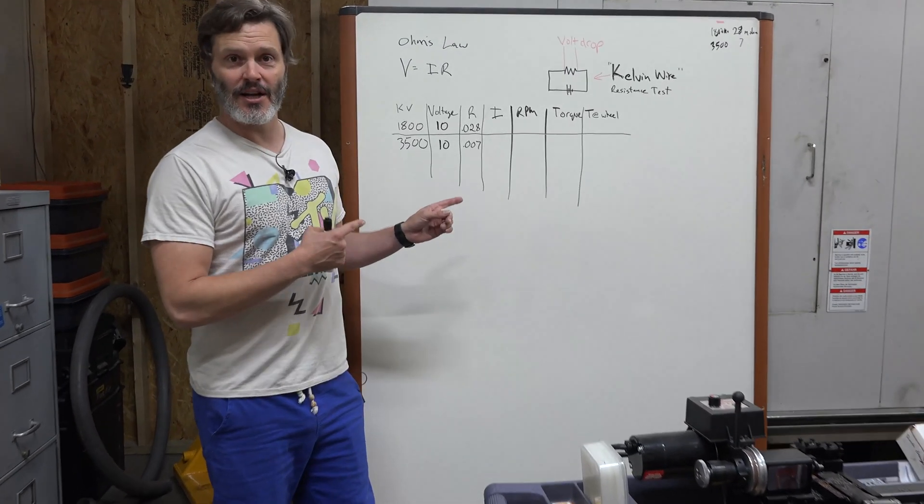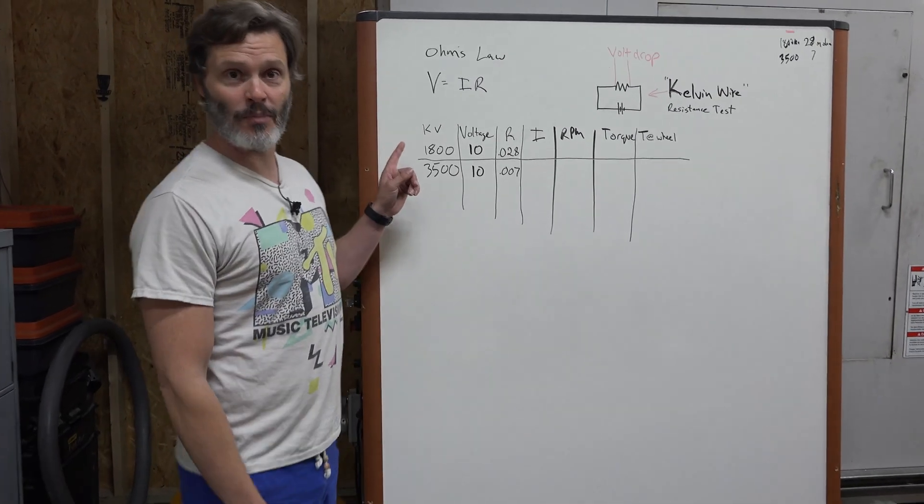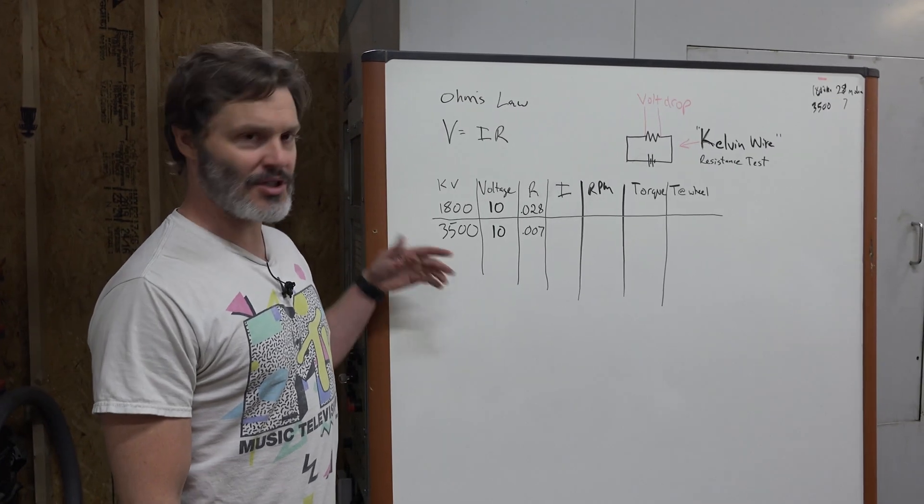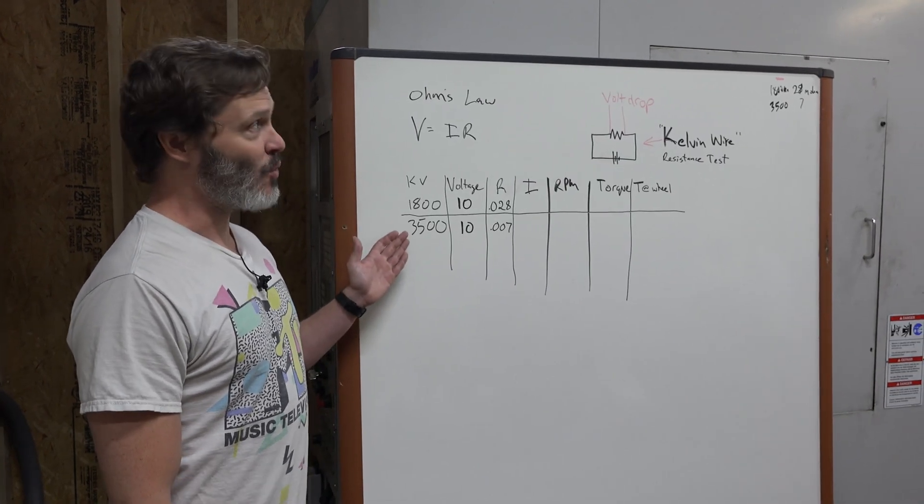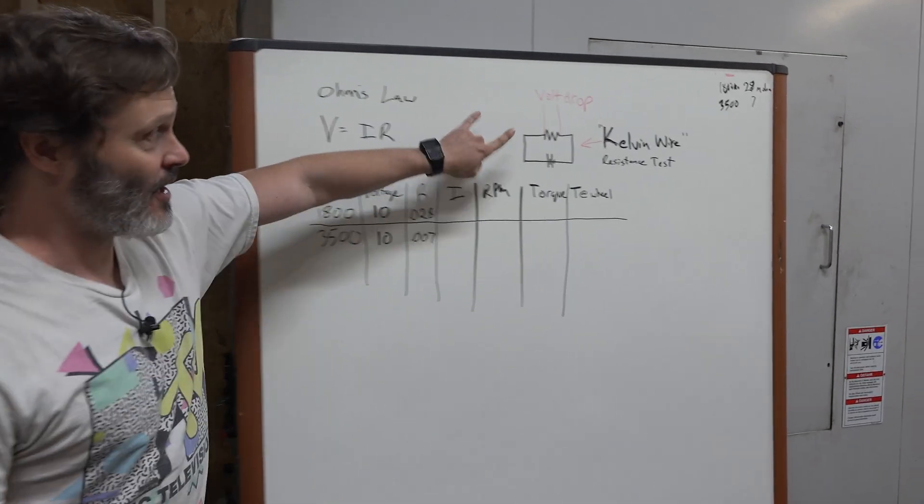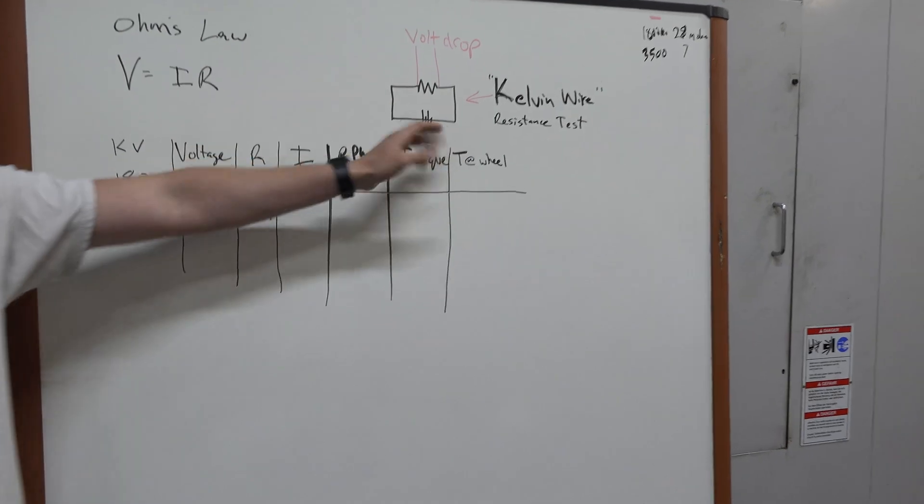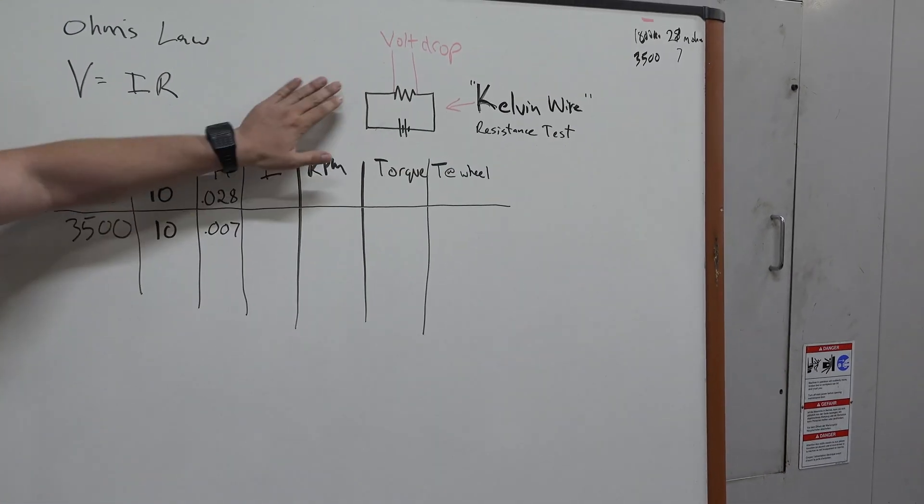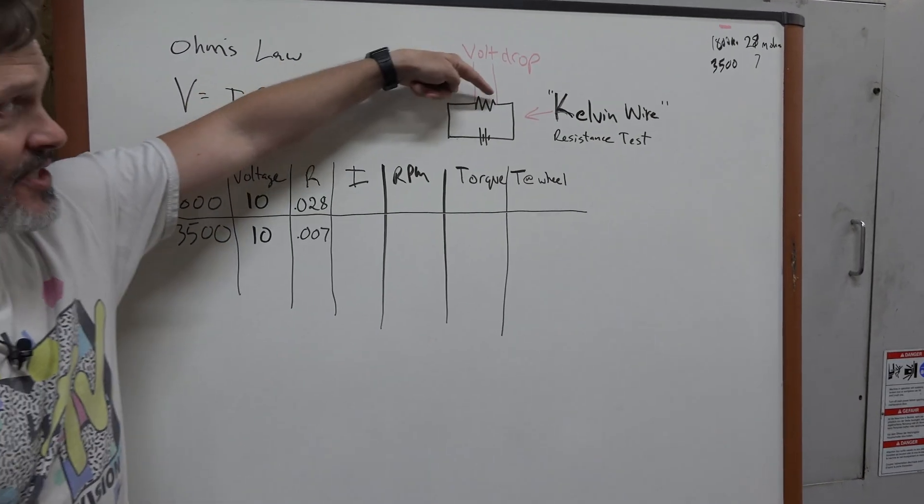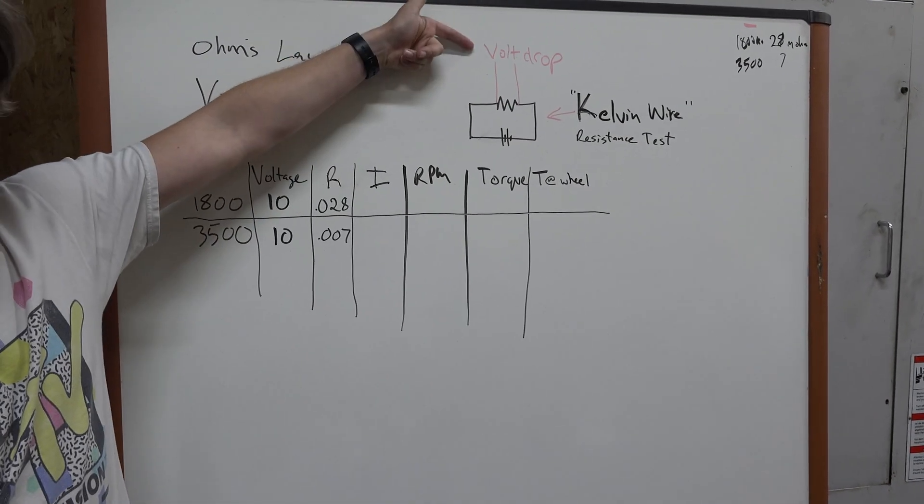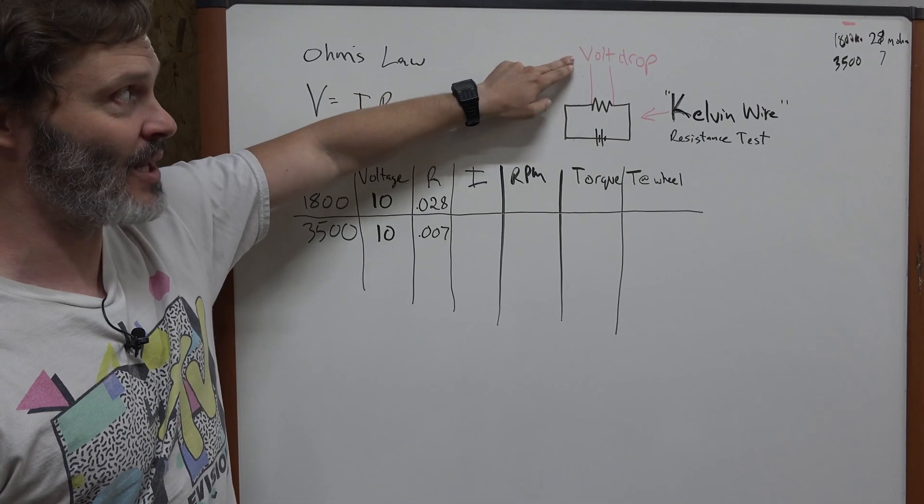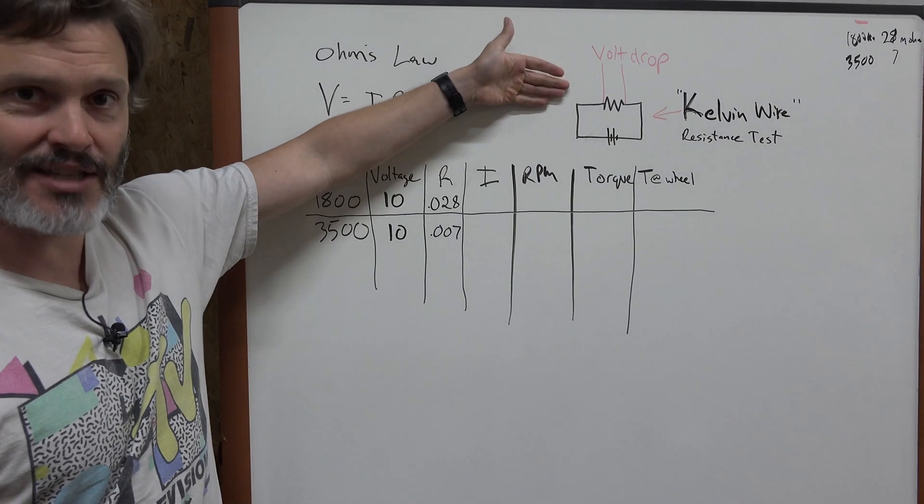I want to show you this using an 1800 kV Puller Pro 540 size and a 3500 which is pretty much twice the speed of the 1800 kV. I went ahead and used this Kelvin wire resistance setup so you pass a certain voltage or technically what I did is I passed exactly one amp through the resistance of the motor and then I used a secondary set of meter leads to get the voltage drop, and that voltage drop if you're passing one amp will give you the resistance in milliohms. This is the Kelvin wire test you can look it up.